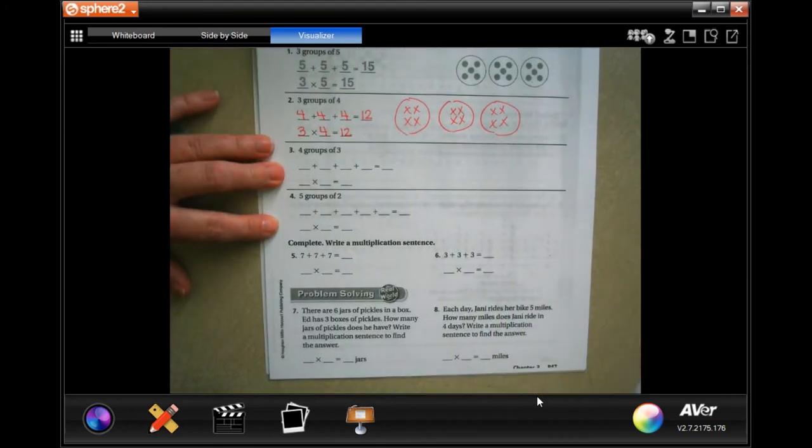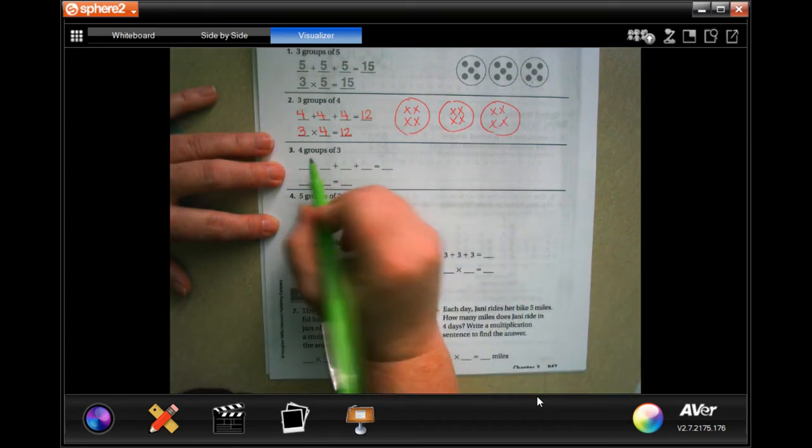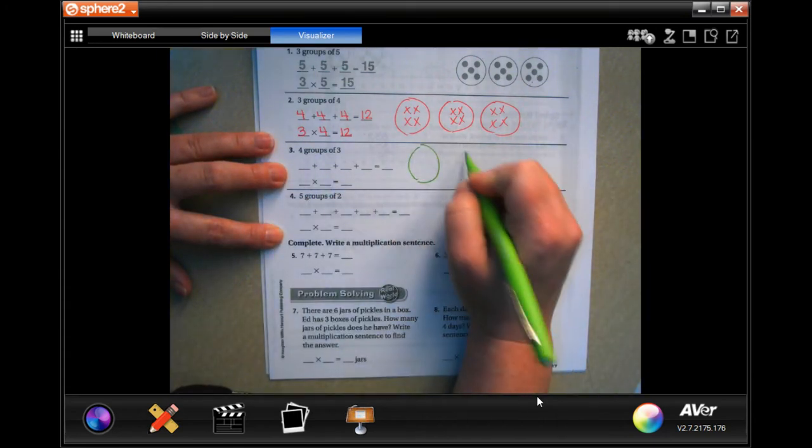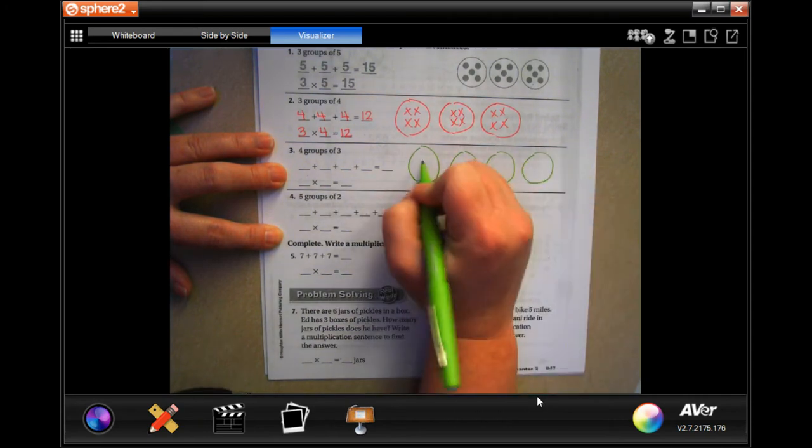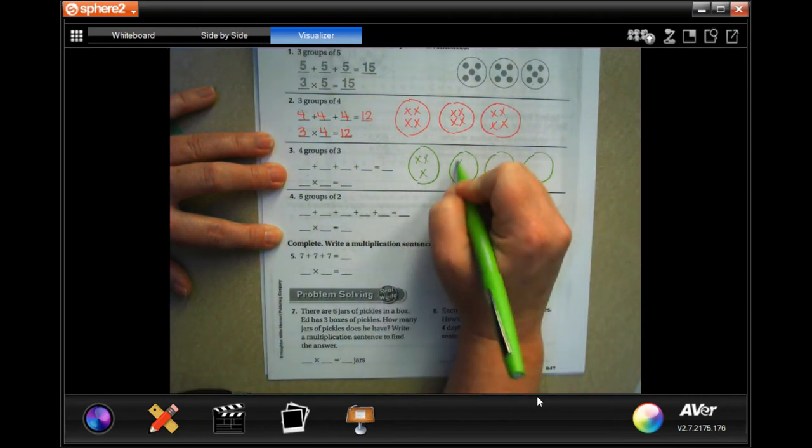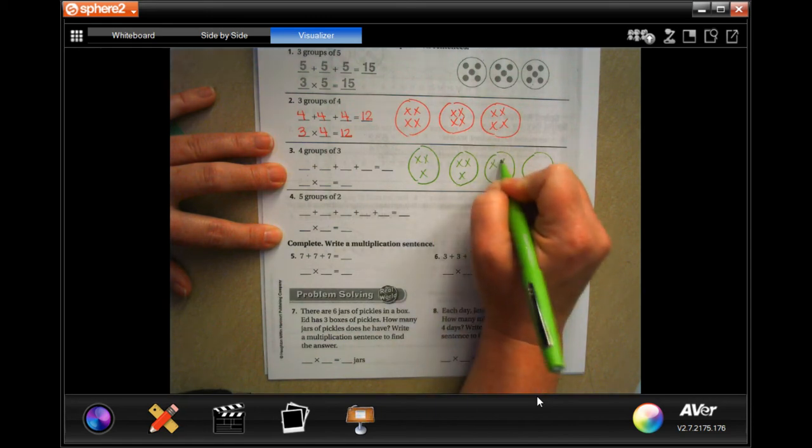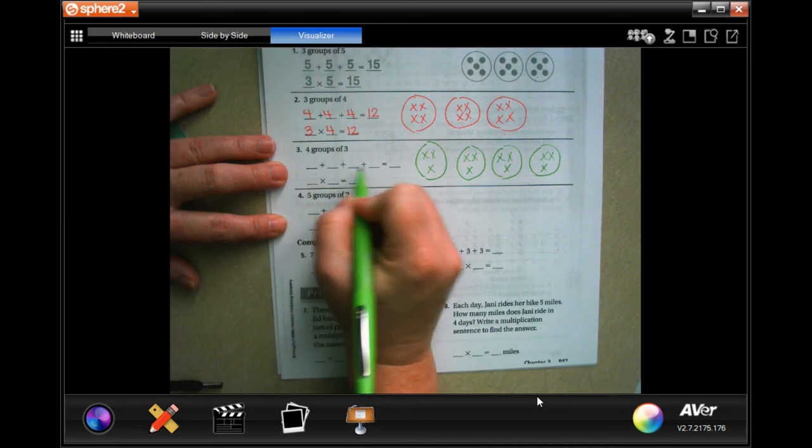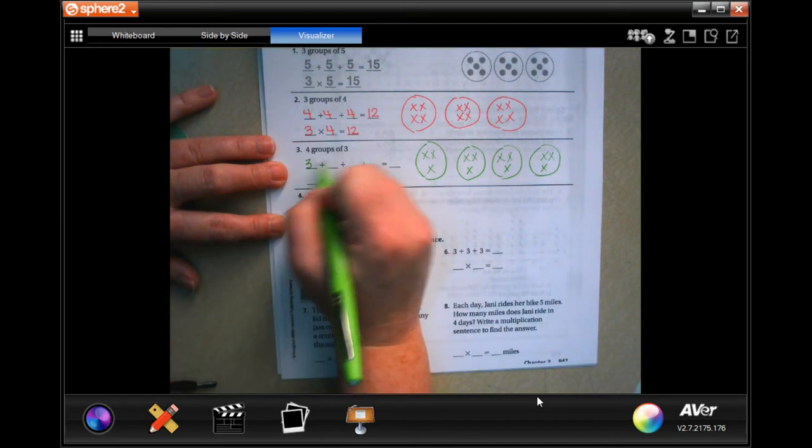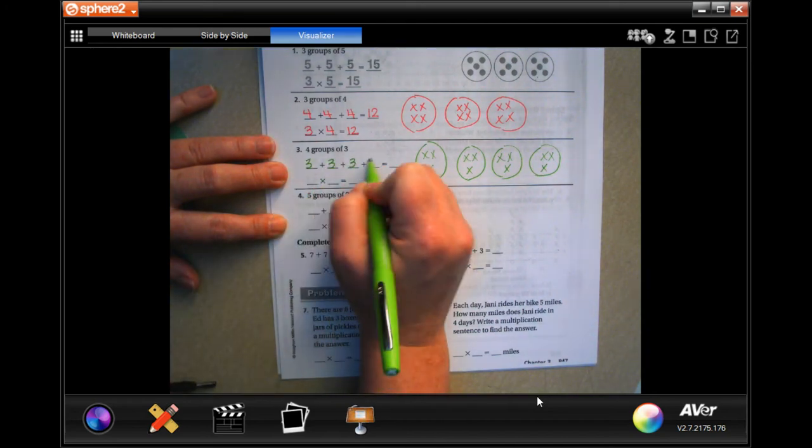We're going to go ahead and do the next one. It says four groups of three. So I'm going to do one, two, three, four groups, and there's going to be one, two, three in each one. So one, two, three, four groups. There's three in each one.